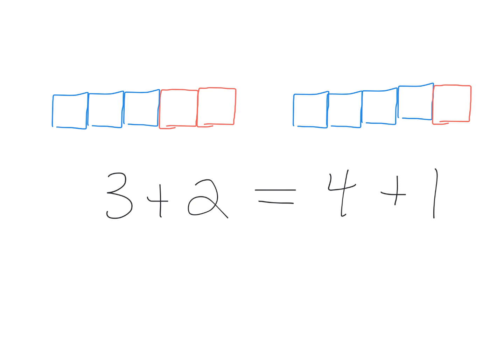Right now, we're trying to show students that the equal sign doesn't always mean get the answer. It might say that this side is balanced, or the same size, or the same amount as this side. Ultimately, we could say that this is equal to five cubes, and this is equal to five cubes, and students will see that that's equal as well.